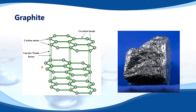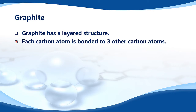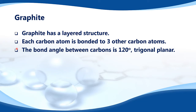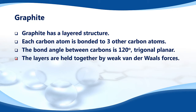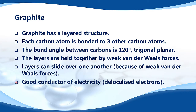Graphite also has delocalized electrons — that is, electrons that are free to move around within the structure — which means it's a good conductor of electricity. In summary: each carbon atom is bonded to three others at 120 degrees (trigonal planar); layers are held together by weak van der Waals forces; layers can slide over one another; it conducts electricity due to delocalized electrons; and graphite is used in pencils.